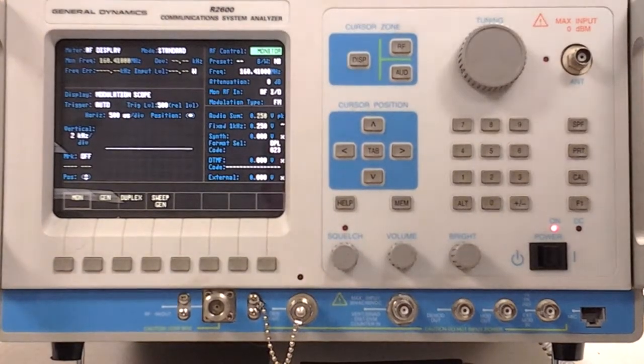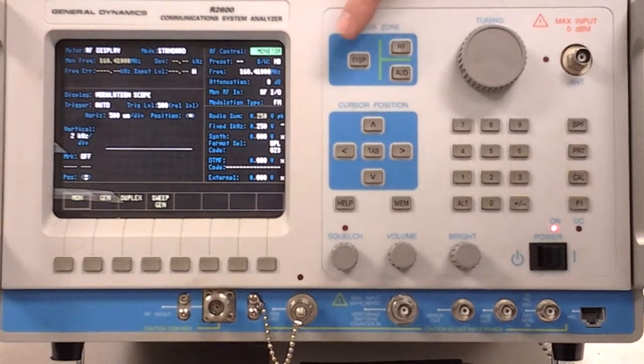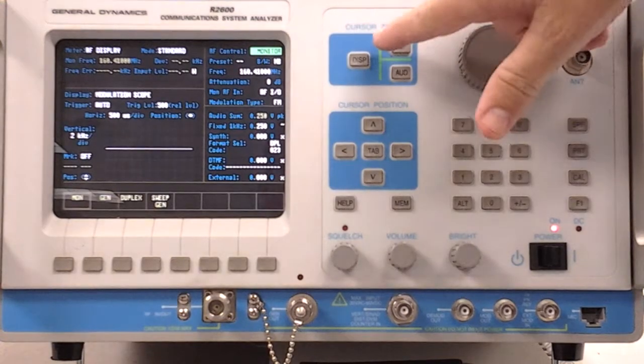Alright, this is the R2600. A couple of things to understand about the R2600 and setup is the zones, the cursor zones.